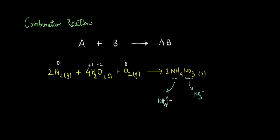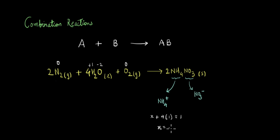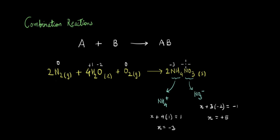The charge on the NH4+ ion is plus one and on the NO3- ion is minus one, and this is a neutral compound, so the sum of oxidation numbers of these ions should be zero. To calculate the oxidation number of nitrogen in NH4+: x plus four times plus one equals one, giving x equals minus three. For nitrogen in NO3-: x plus three times minus two equals minus one, giving x equals plus five. So this nitrogen has an oxidation number of minus three and this nitrogen has an oxidation number of plus five.